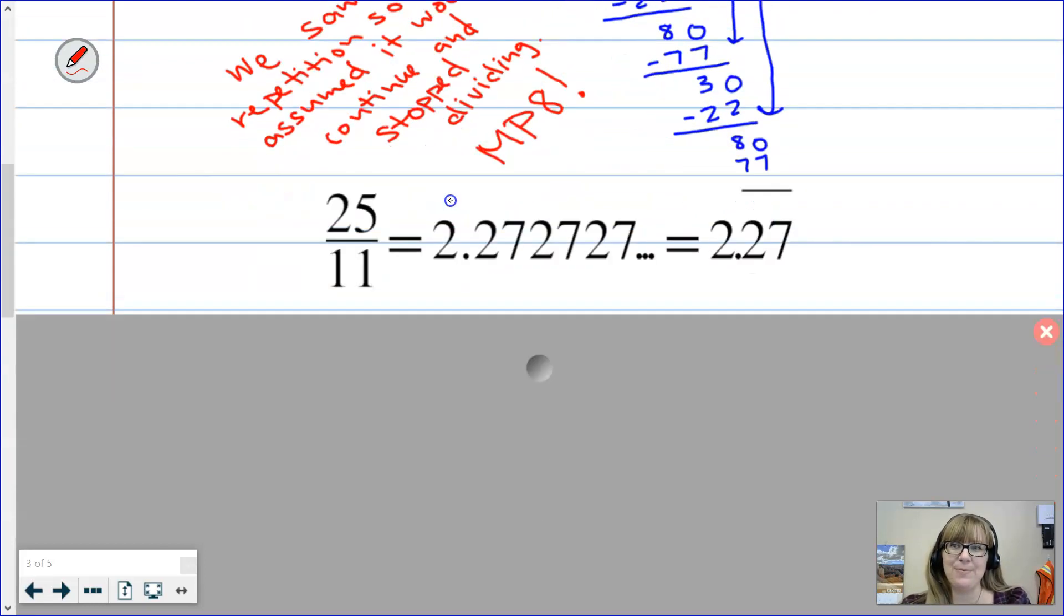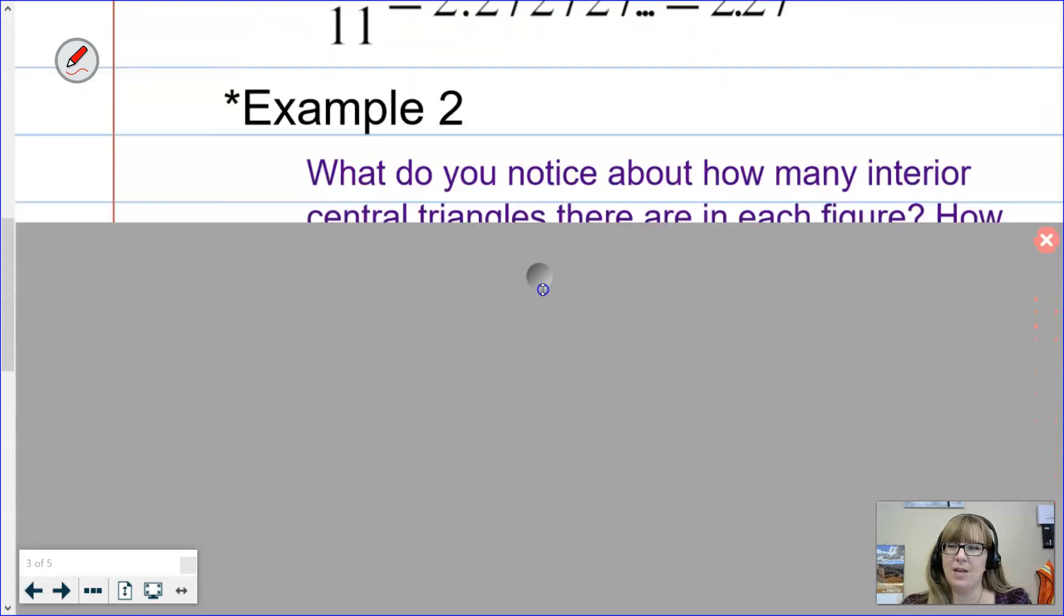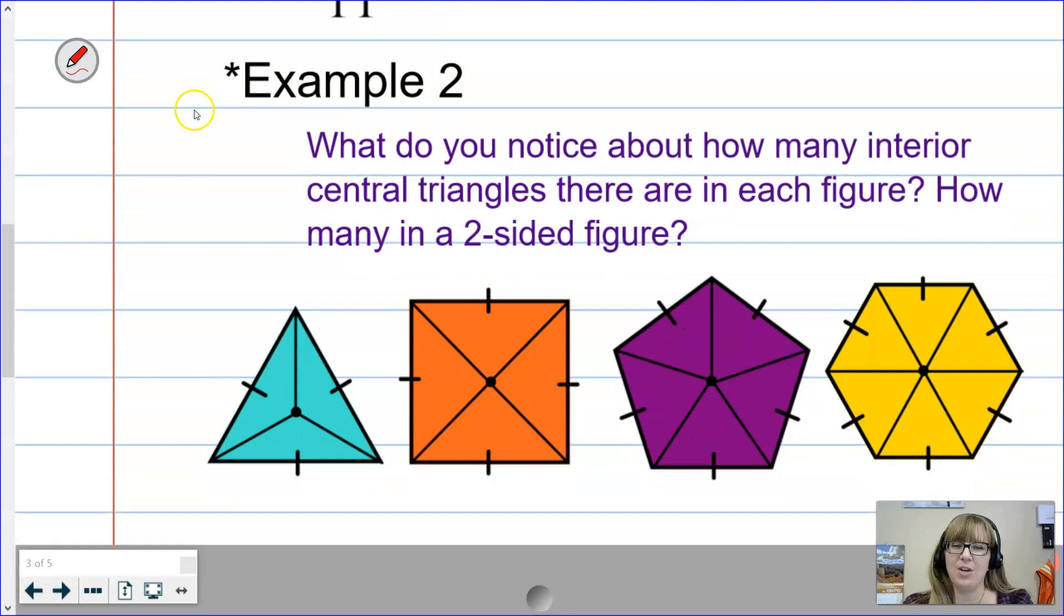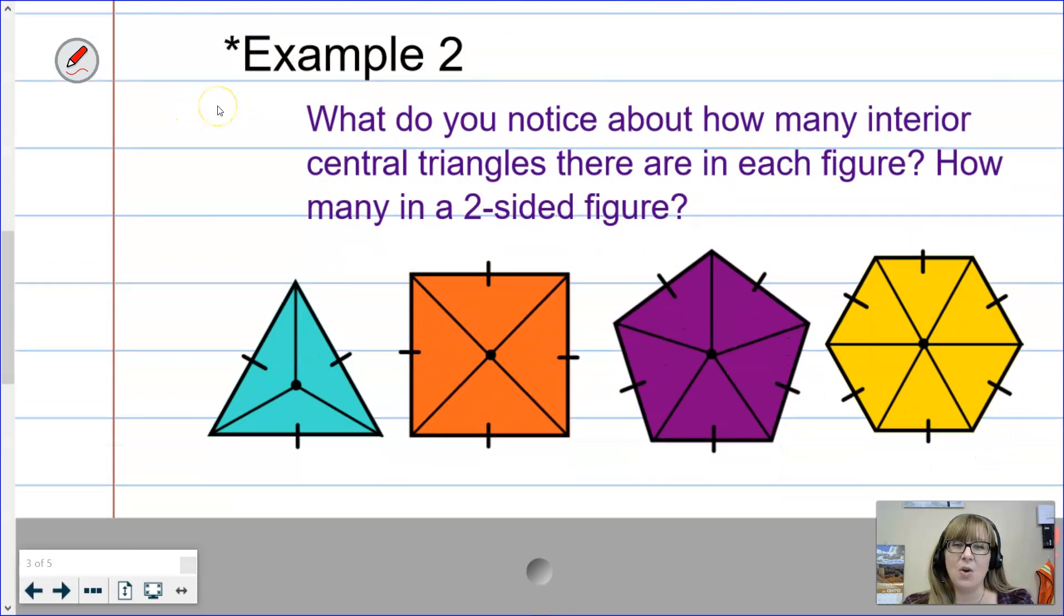Here's your next example. I've got multiple figures and I'm asking the question: how many interior central triangles are there in each of these figures? Let's break down those words. Interior means it's on the inside. Central triangles - I'm looking for triangles and the central means they all share that vertex right there in the center of each of the figures. So let's go ahead and count these.